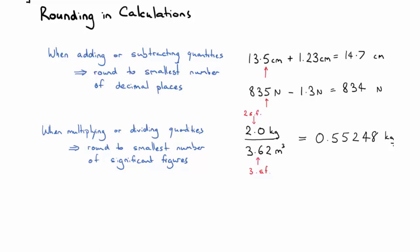But of course, we can't have that many significant figures if we only knew the first one to two significant figures. So what we're going to do is cross out those extra 3 there, and our final answer is 0.55.